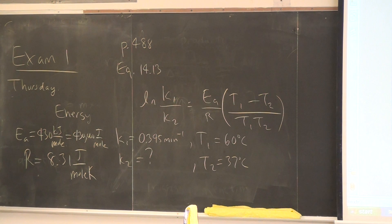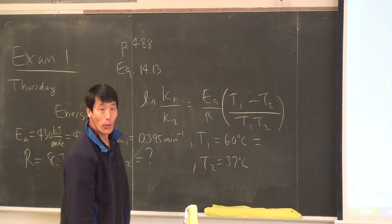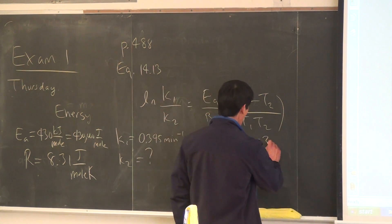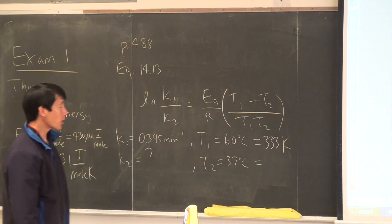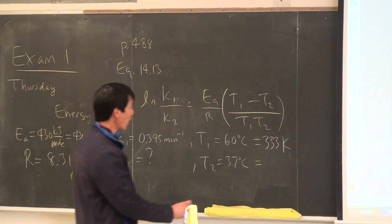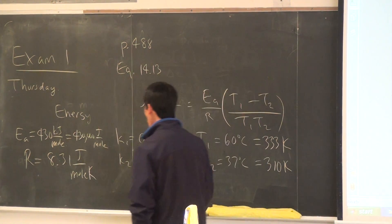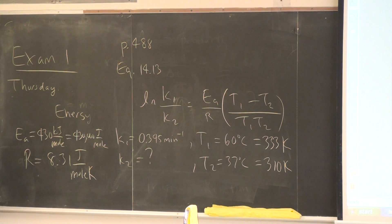We also have to convert those temperatures. So, we have to convert from degrees Celsius to degrees Kelvin. So, 60 degrees Celsius is equal to 333 degrees Kelvin. And 37 degrees Celsius is equal to 310 degrees Kelvin. So, you set up your equation.